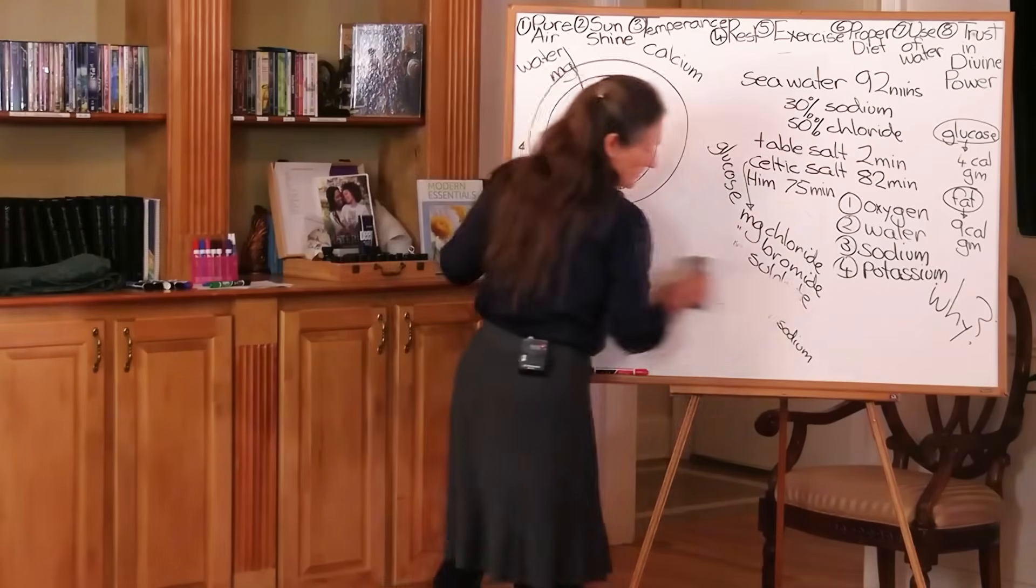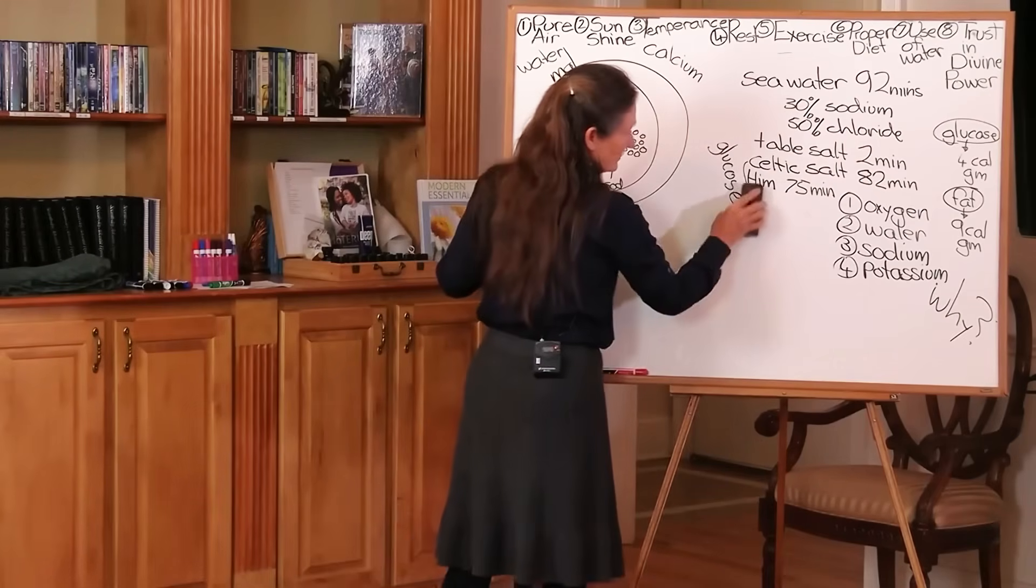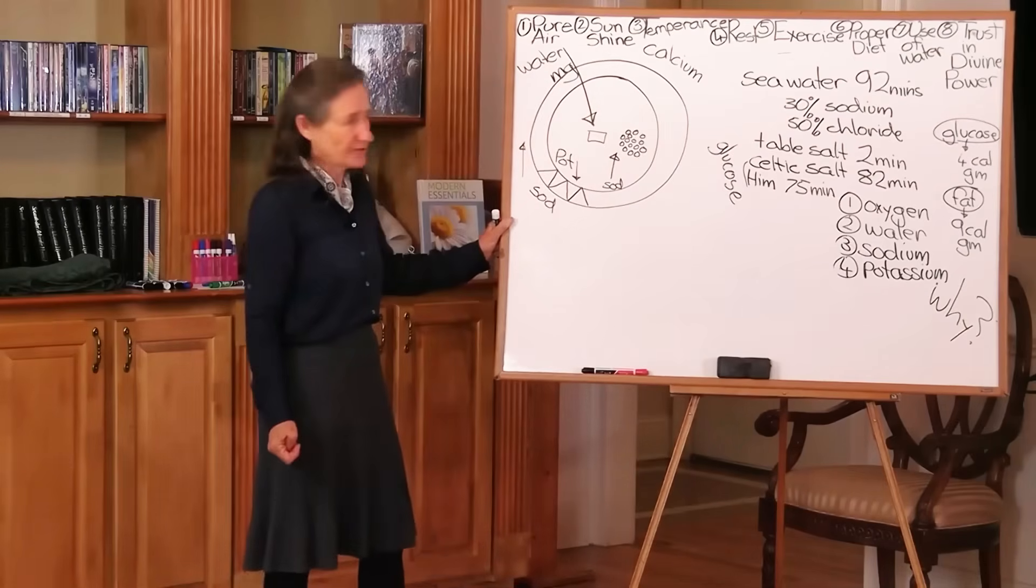So as you can see, water is very important, but so is the salt. And again, the potassium is found in all your fresh fruits and vegetables.